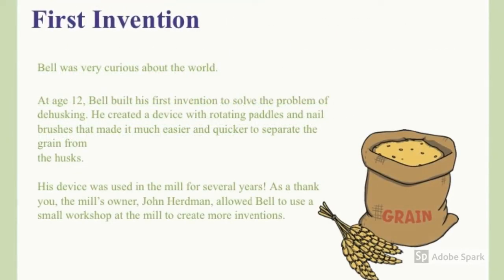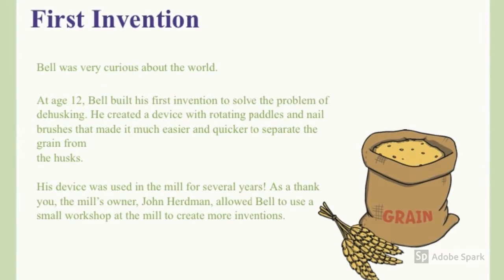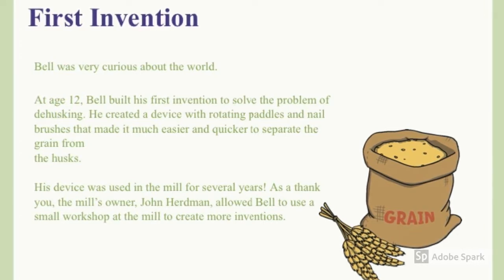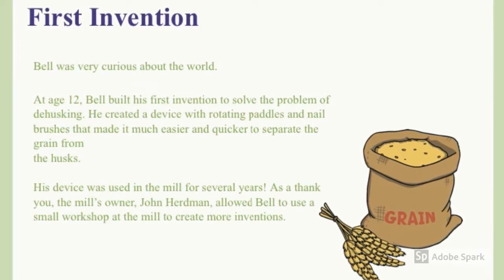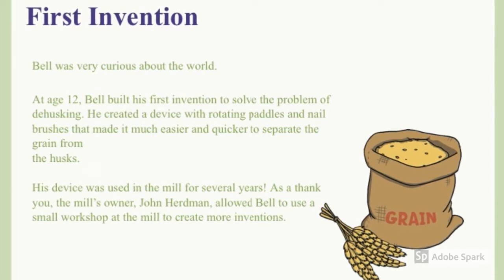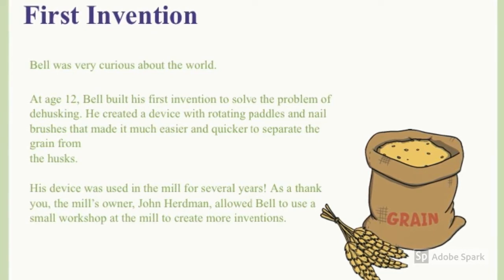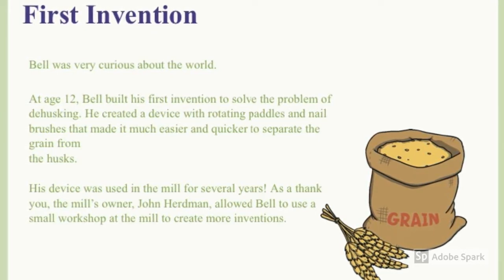Bell was very curious about the world around him. At age 12, Bell built his first invention to solve the problem of dehusking. He created a device with rotating paddles and nail brushes that made it much easier and quicker to separate the grain from the husk. Because his device was used for several years, as a thank you, the mill owner allowed Bell to use his small workshop in the mill to create more inventions.